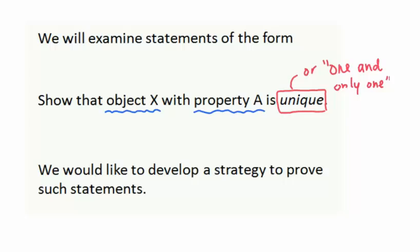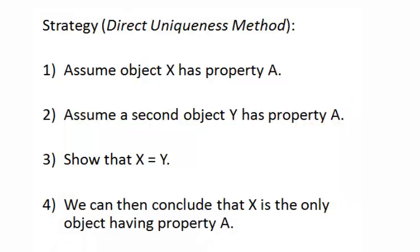Essentially what we want to do is show that object X, with the specific property A that it has, is the only object that has this particular property in the set of objects we're looking at. Here's the strategy we're going to use to prove such statements.